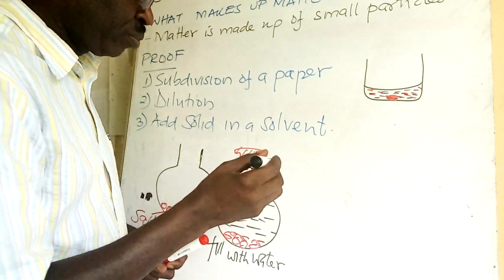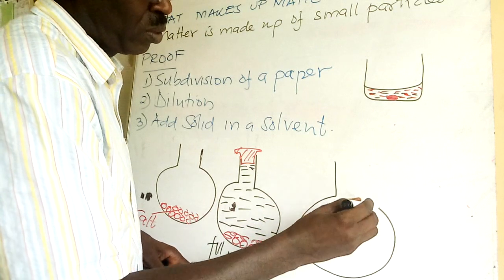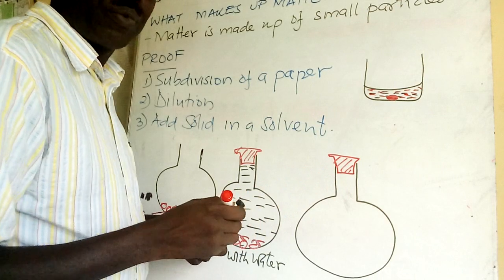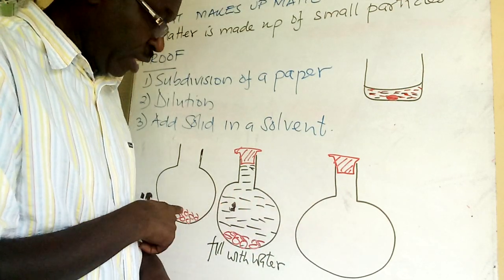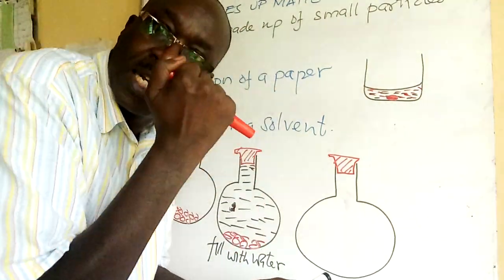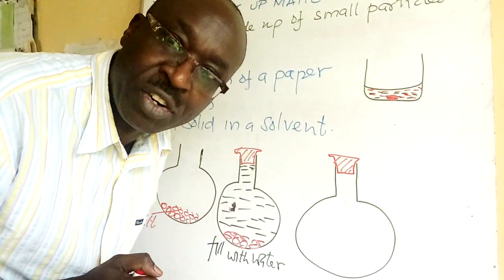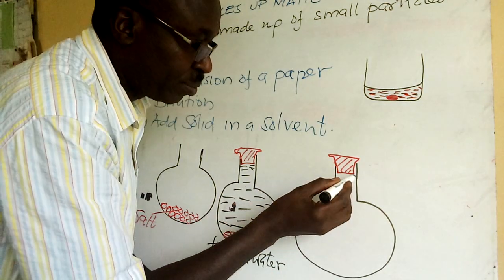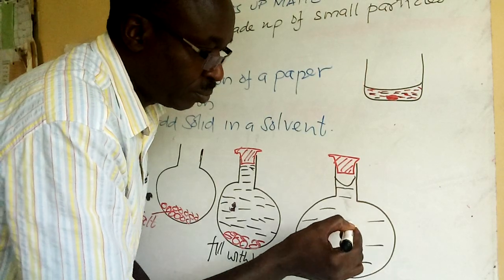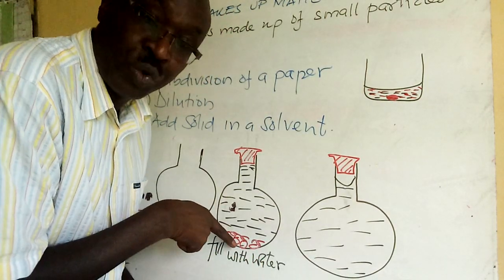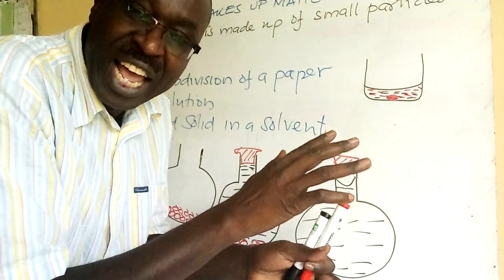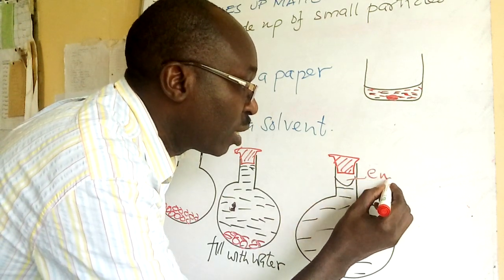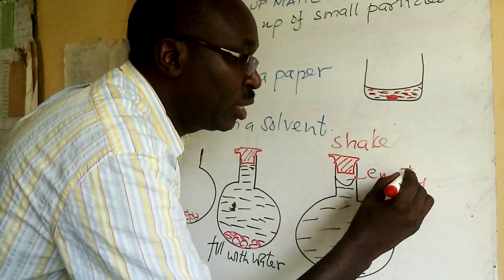The third step is to shake the flask with a cork. We shake it, shake it, then place it on the table. What do you find? We don't see salt separate from water — we see everything as a solution. But look: there is some empty space at the top. We have to account for this empty space.